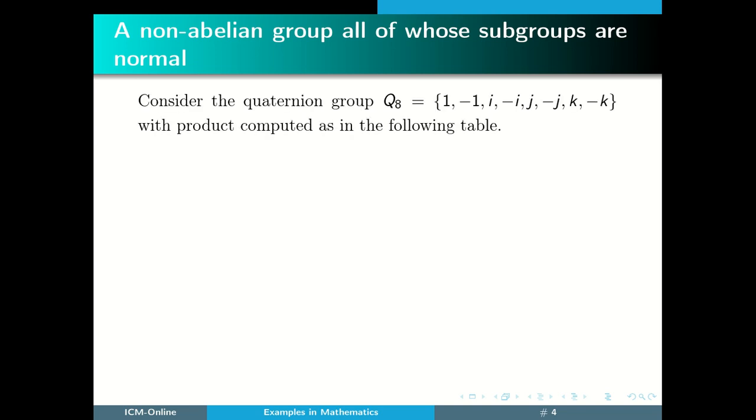Consider the quaternion group Q8 which consists of 1, minus 1, i, minus i, j, minus j, k, and minus k with product computed as in the following table.